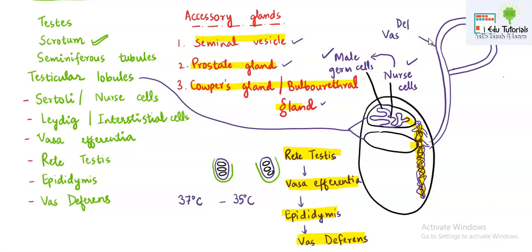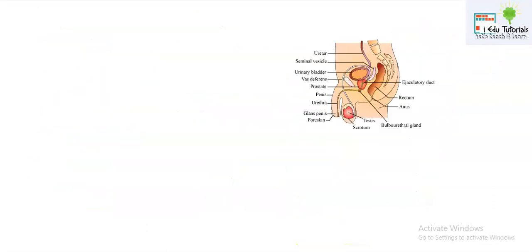Each vas deferens extends from each testis and as it extends upward it meets the three accessory glands: seminal vesicles, prostate gland, and Cowper's gland. Note that the prostate gland is a single structure, while the seminal vesicles and Cowper's glands are present in pairs. Now we will use the NCERT diagram to clarify your concepts. Testes are the oval-shaped structures present extra-abdominally, and the scrotum is the skin pouch which contains the testes.